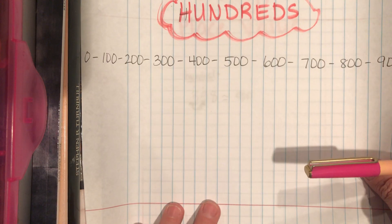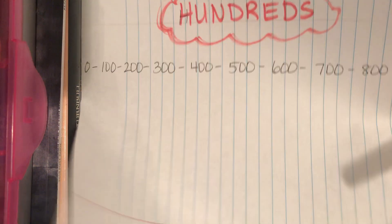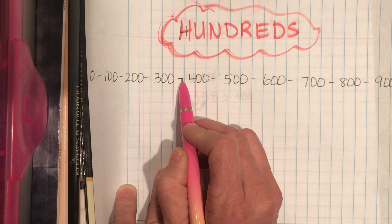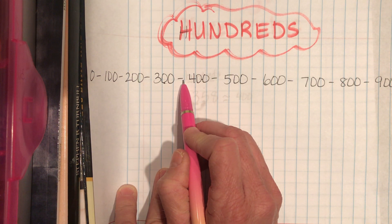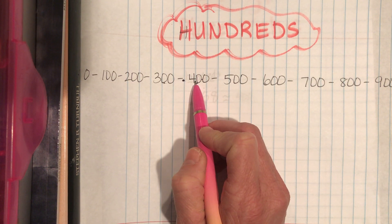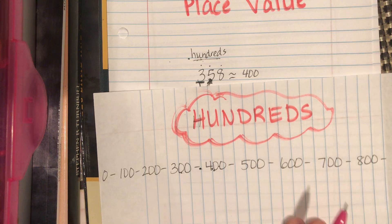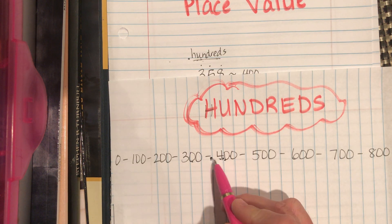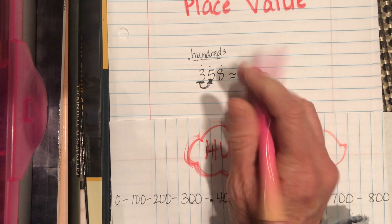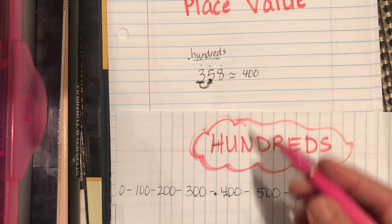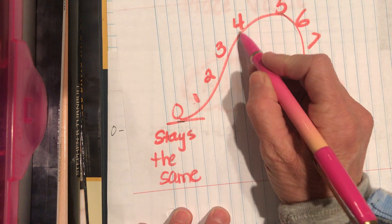When rounding to the nearest hundred, think of the chart of all hundreds. Our number was 358 — where would you put this on a number line between 300 and 400? It should be right about in the middle. The question is: is it closer to 400 or closer to 300? Once you're at 350 or more, you've passed the middle mark and are closer to 400. It's like a birthday — once you're six and a half, you're officially closer to seven. So 358 rounds to 400.